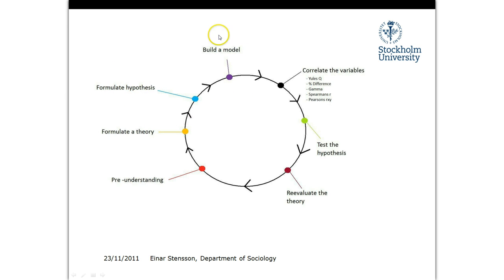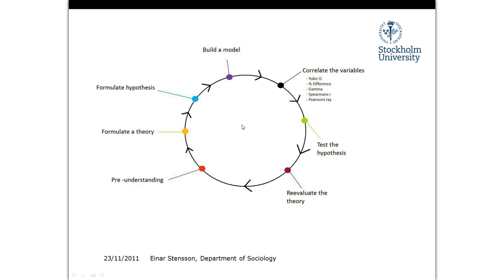Then you use those theories to formulate a hypothesis about the field you're interested in investigating, and then you start building your model. At this point you start creating variables that you want to use — in our case we had gender, dancing roles, etc.